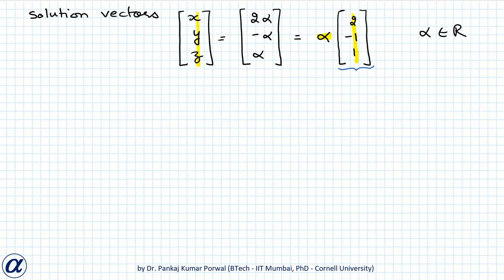And clearly all solution vectors are written as linear combination of only one vector. So the dimension of my solution space capital X is 1, and basis for my solution space capital X is the vector [2; -1; 1].